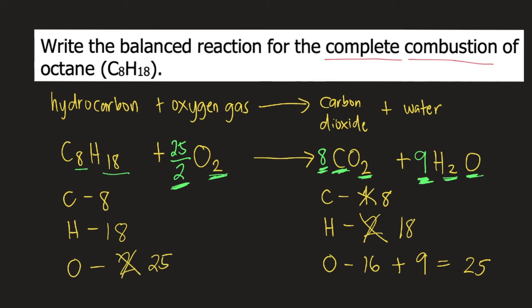Since all elements are already balanced, technically, your reaction is already balanced. But some professors do not want or they do not prefer to have fractions on balanced chemical reactions. They want whole numbers. So how do we remove the fraction?